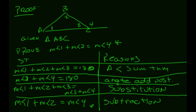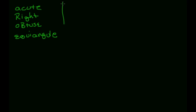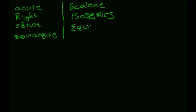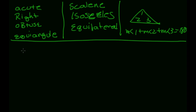To recap: classifying triangles by angle — you have acute, right, obtuse, and equiangular. Classifying by sides — you have scalene, isosceles, and equilateral. The Triangle Angle Sum Theorem states that the measure of angle one plus angle two plus angle three must equal 180. We got four corollaries from this theorem.